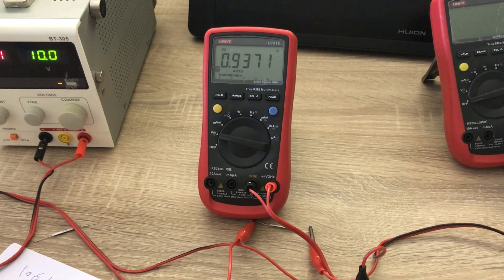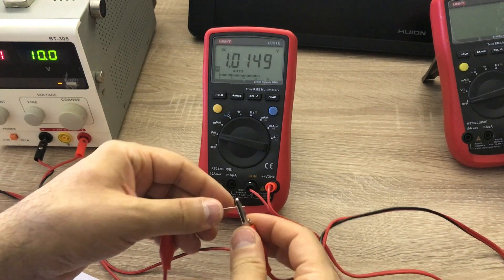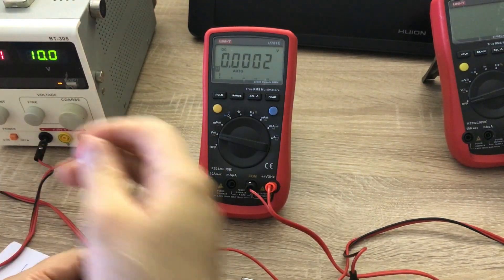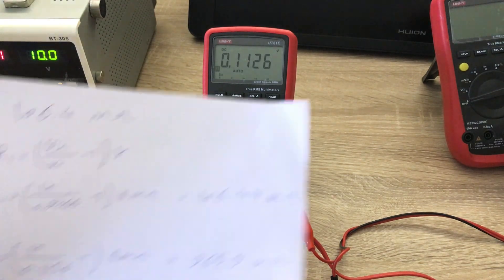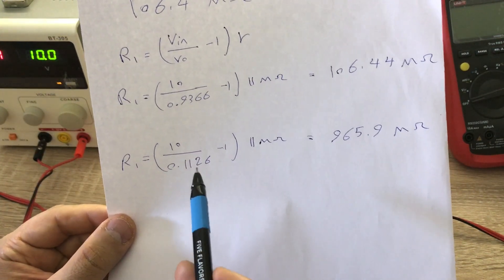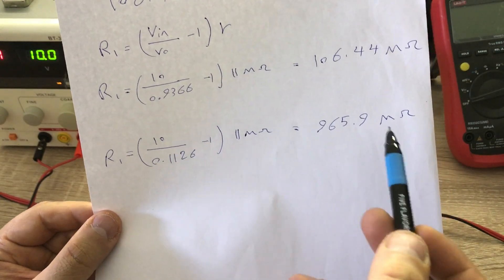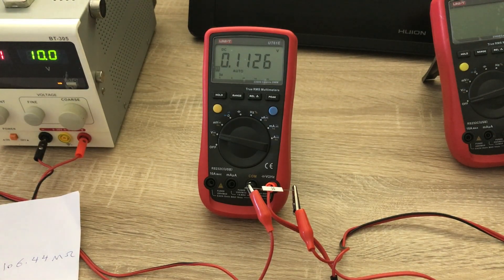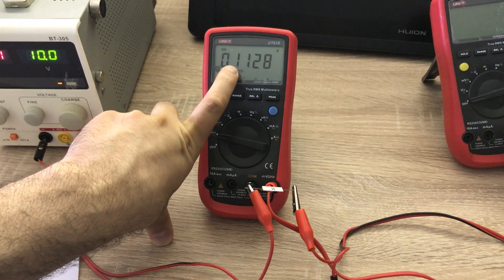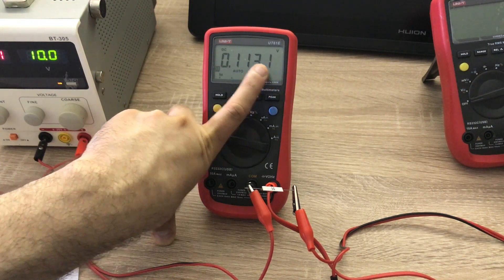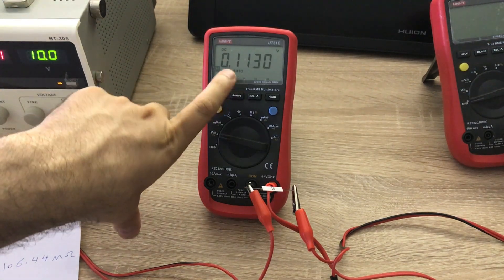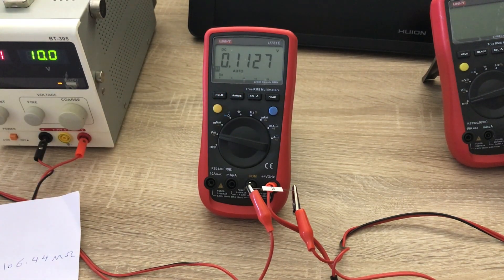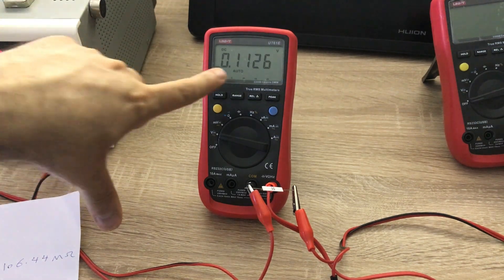Now let's measure a resistance we can't measure directly: 1 gigaohm. I connect the 1 GΩ resistor, read the voltage, and since it's below 2.2 V I use 11 megaohm in the formula. The result is 965.9 megaohm — close to 1 gigaohm. For a 10 GΩ resistor the digit would shift further, still measurable with about 5–10% accuracy. Increasing the input voltage, say to 30 V, allows measuring 30 gigaohm or even higher.